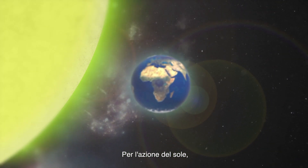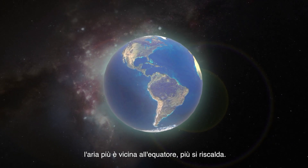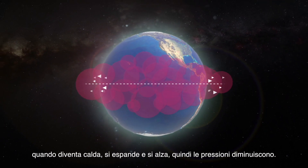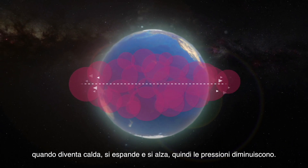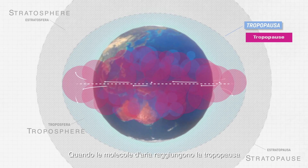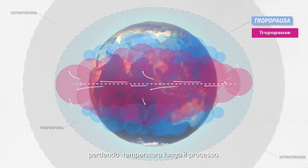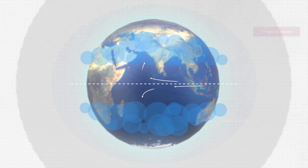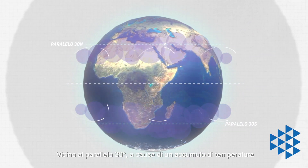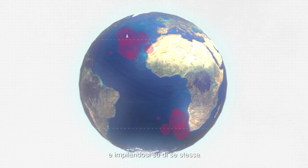Because of the action of the Sun, the closer the areas to the equator the warmer it will get. As it gets warm, it expands and rises, so pressure decreases. When the air molecules reach the tropopause, they are forced to head for the poles, slowing in temperature in the process. Near parallel 30 degrees, because of the accumulation and temperature, the air comes down again, compressing, heating, and stacking itself.